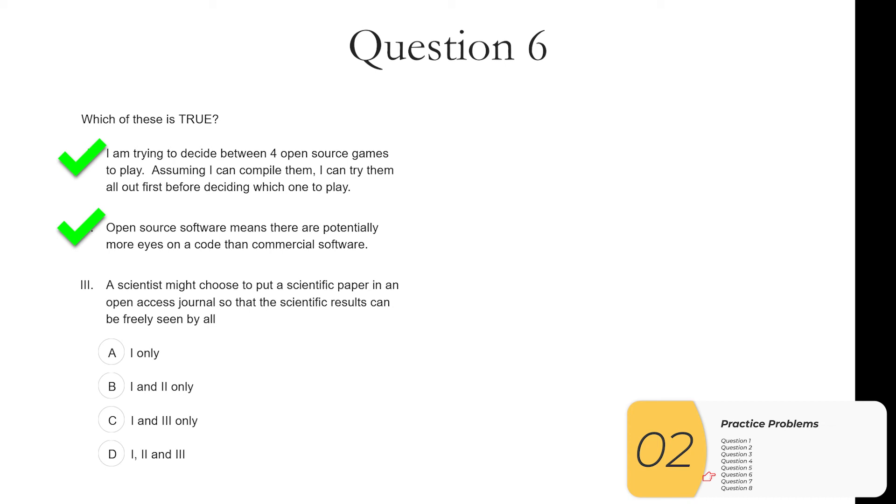Three. The scientist might choose to put a scientific paper in an open access journal so that the scientific results can be freely seen by all. This one is definitely true. That's the whole reason we have open access journals. So the answer here is one, two, and three. These are all true and we're looking at D.